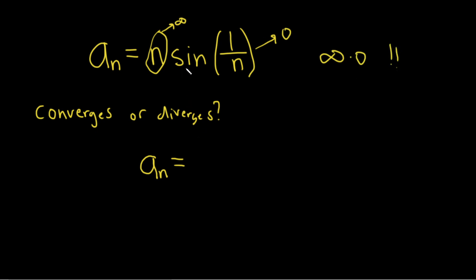So in order to fight that, what we'll do is write it like this: sine of 1 over n divided by 1 over n in parentheses. And if you think for a moment, when you take sine of 1 over n and you divide it by 1 over n,